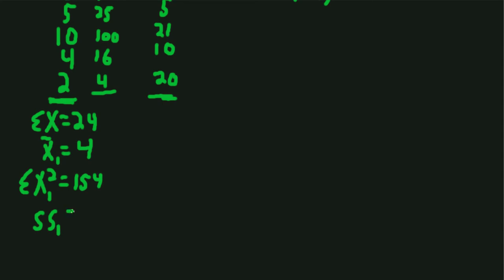Now we can calculate the sum of squares for group 1. Sum of squares for group 1 is going to be sum of the squared X's for group 1, which is 154, subtract sum of X squared, which is 24 squared over n, which is 6. So we have 24 squared divided by 6, which is 96. The left hand side is 154 minus 96, and I get 58 for sum of the squared deviations from the mean for group 1.